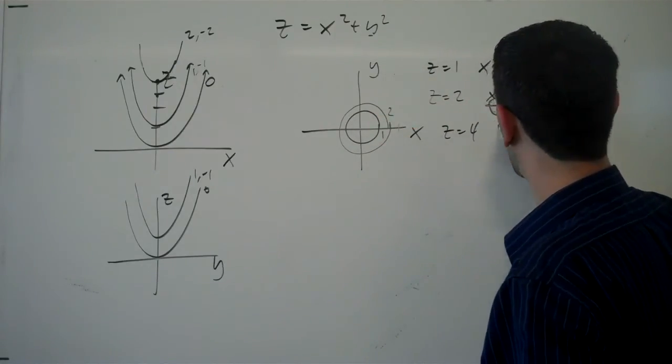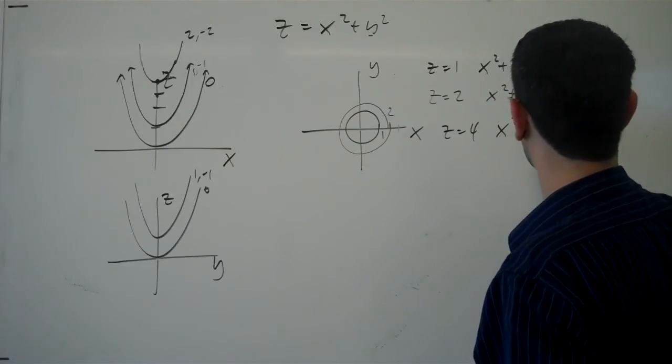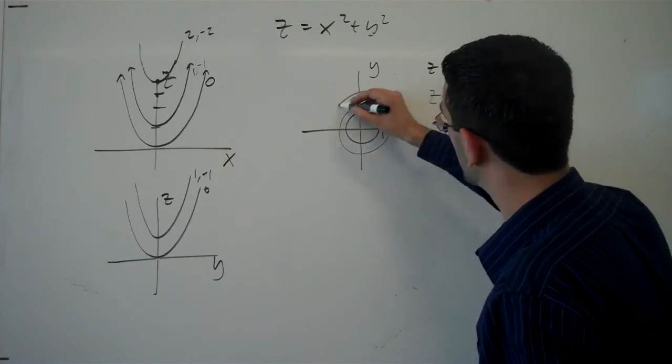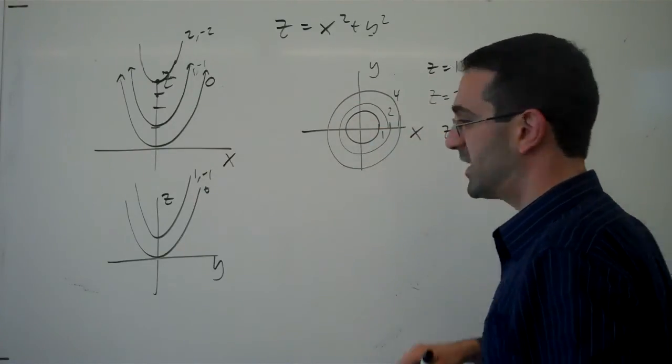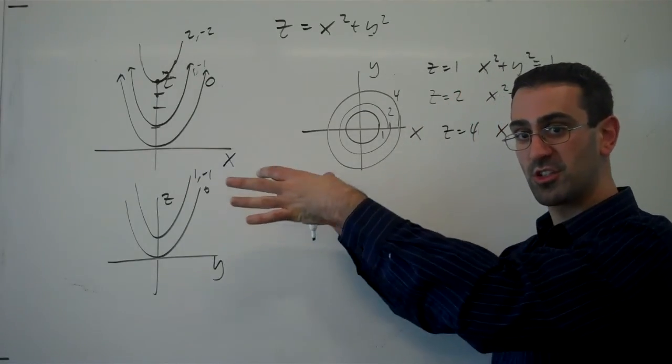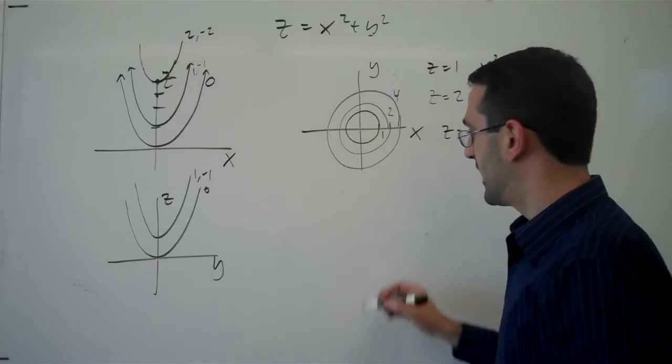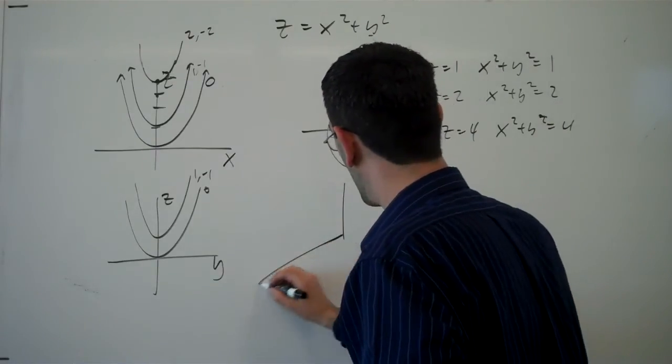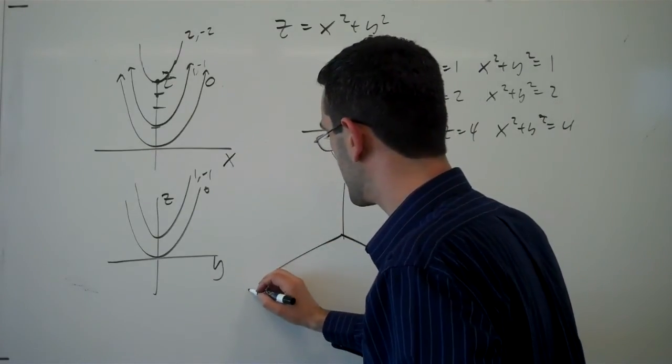And we're going to get different circles here. So if z equals 4, we'd have x squared plus y squared equals 4, which is a circle of radius 2. And so we have smaller circles lower down, larger circles going up.